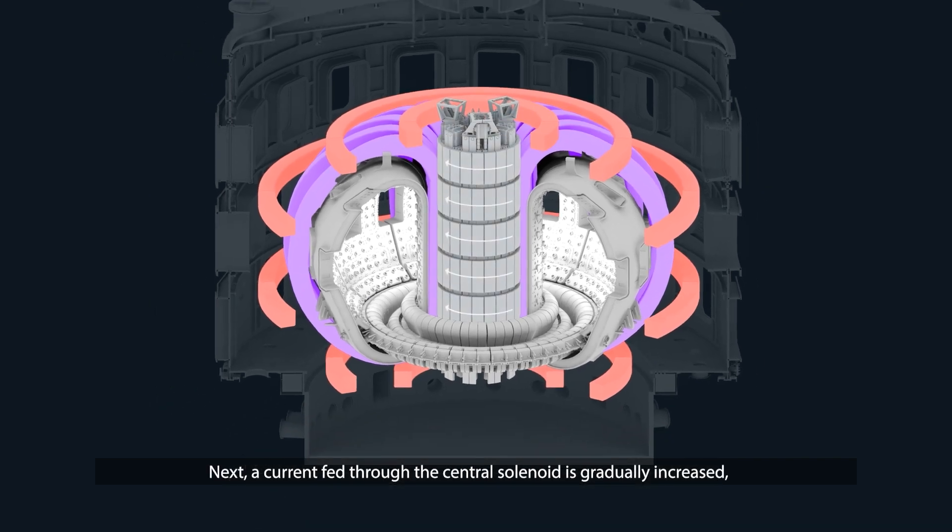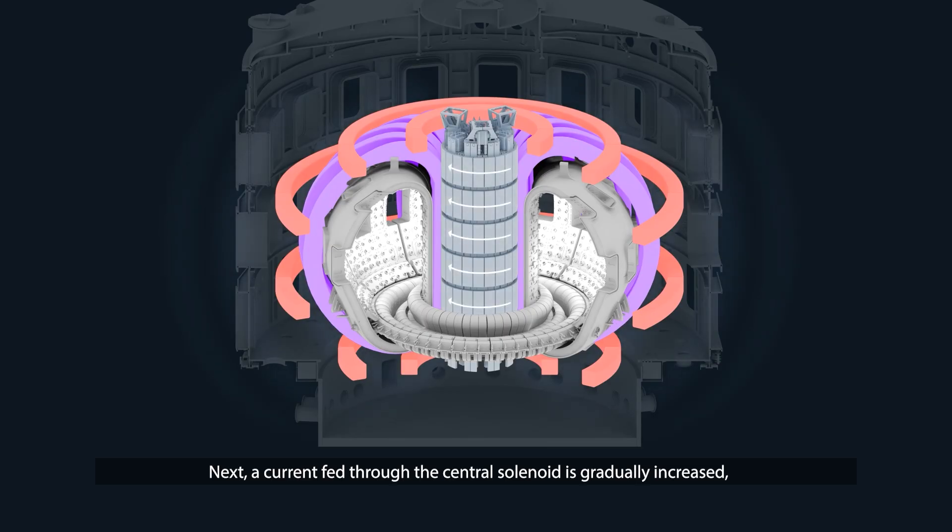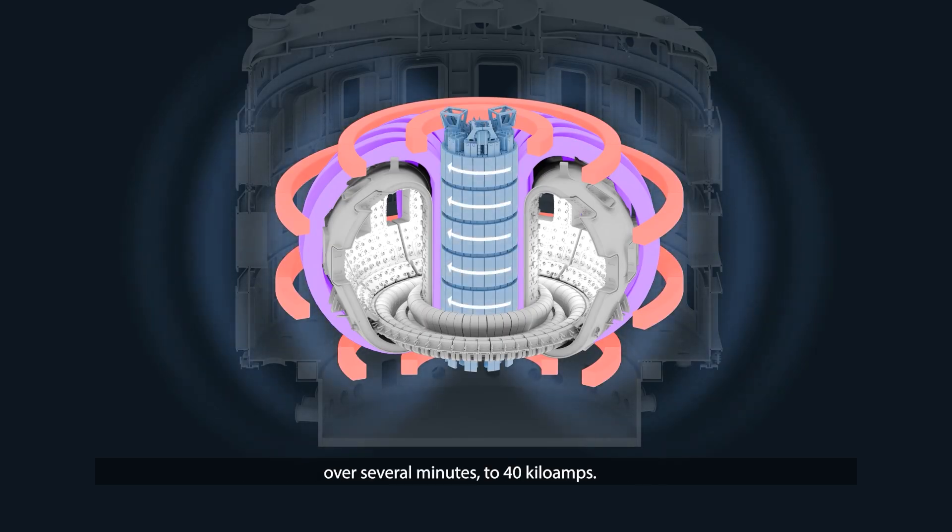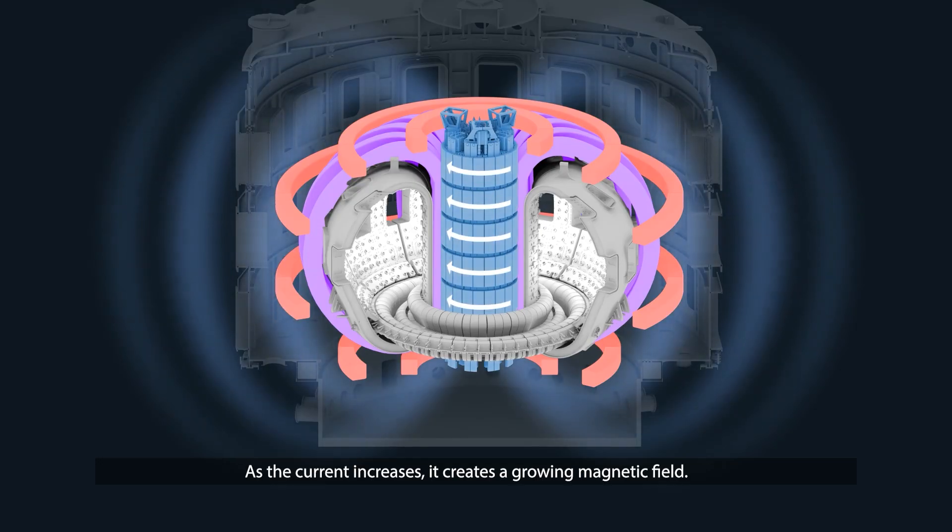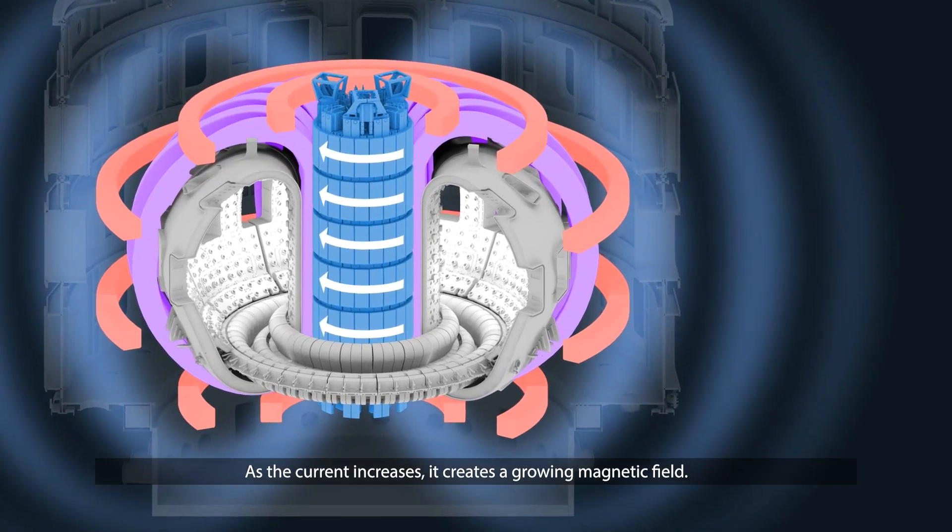Next, a current fed through the central solenoid is gradually increased over several minutes to 40 kiloamps. As the current increases, it creates a growing magnetic field.